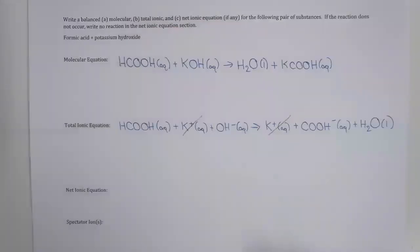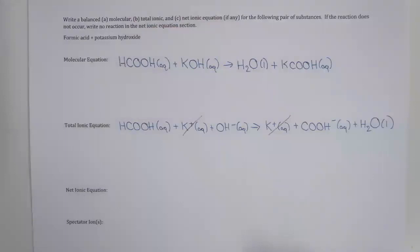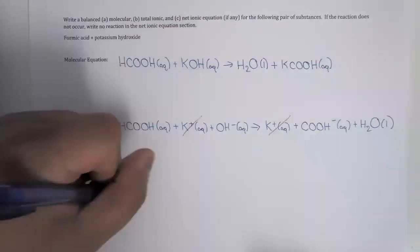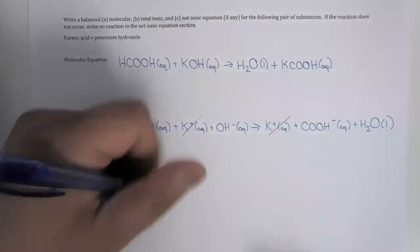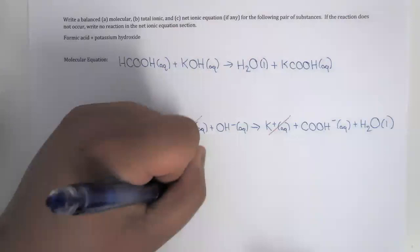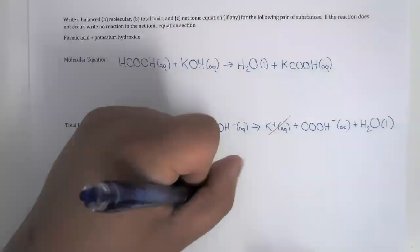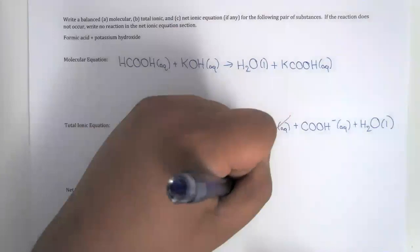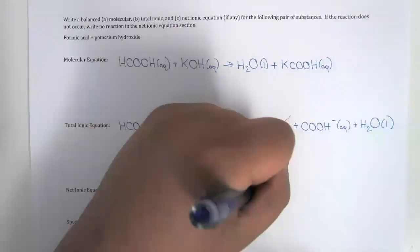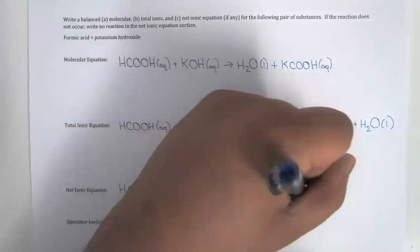The net ionic equation is formic acid, plus hydroxide ion, forms formate ion, plus liquid water, plus formate ion.